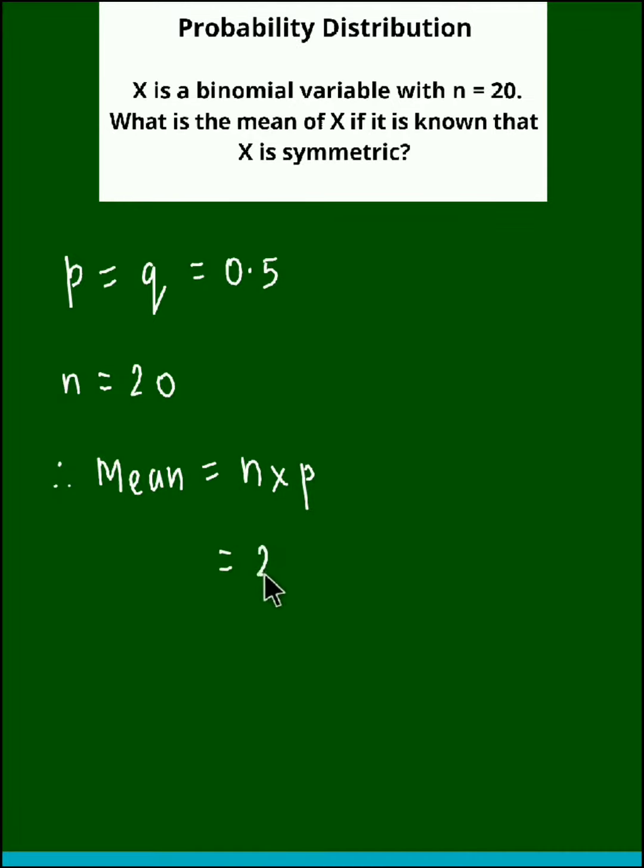Now n is 20 and the value for P is 0.5. If you multiply the two we obtain the value as 10. So the mean is equal to 10.